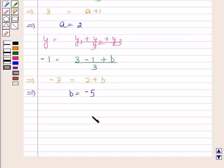So a equals 2 and b equals -5 is our required answer. This now ends the session. Bye and take care.